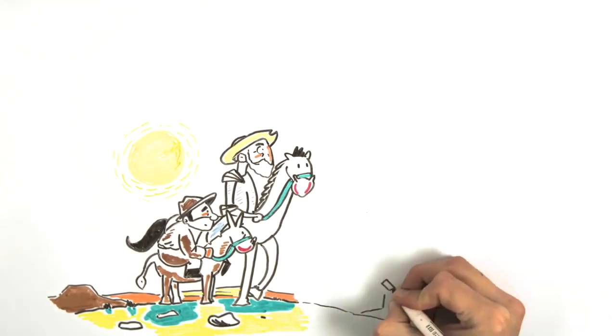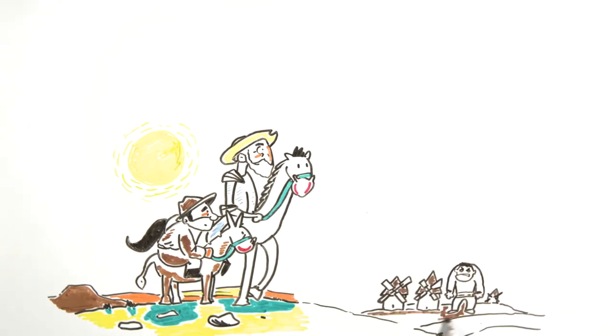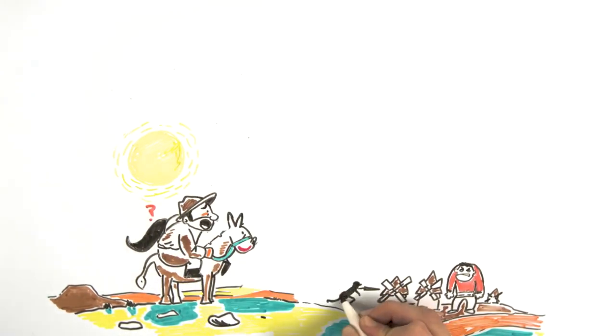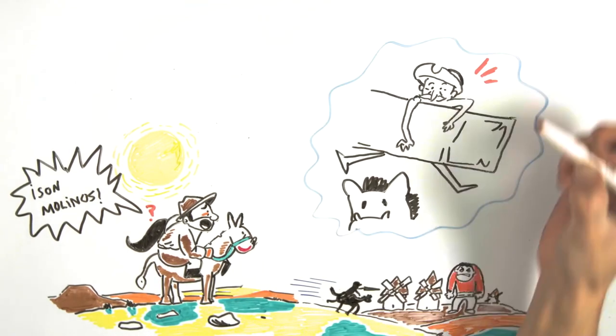Along the way, they come across windmills, but Don Quixote confuses them with fierce giants. Despite the warnings of his squire, he faces the windmills and it goes wrong.